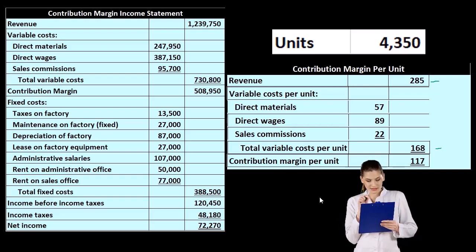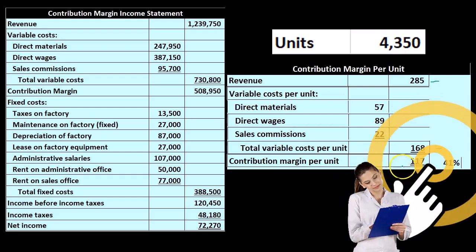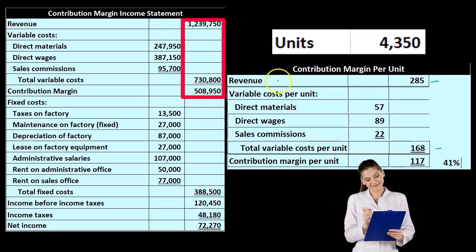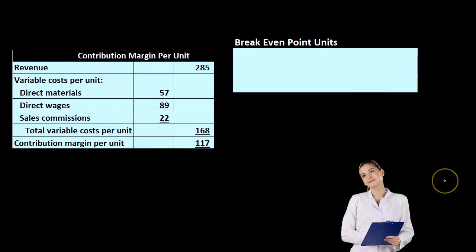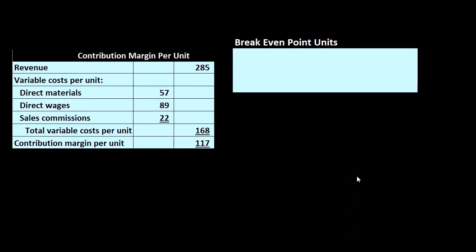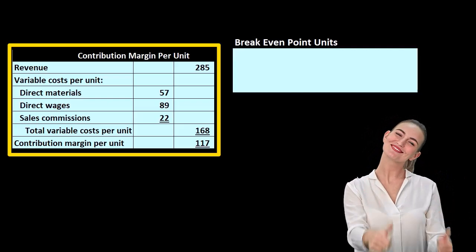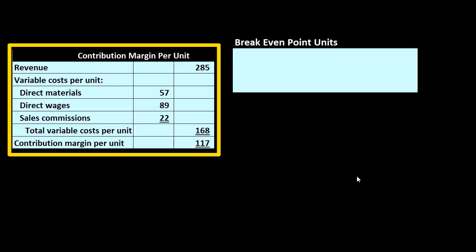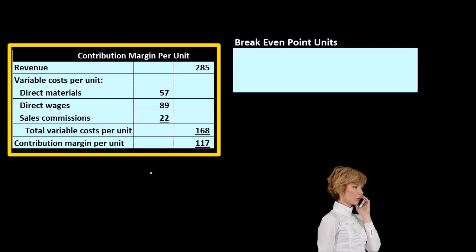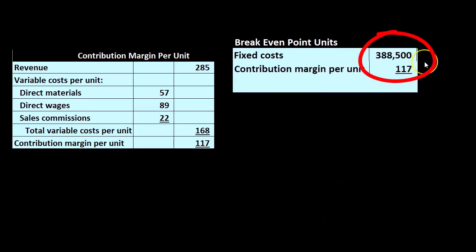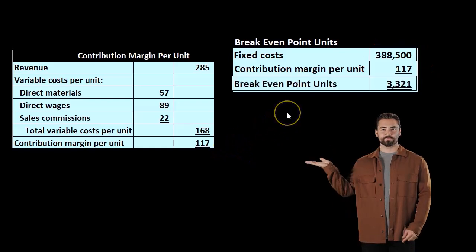We can also calculate the contribution margin percent as the contribution margin per unit divided by the revenue per unit, representing the contribution margin as a percentage. Once we have that, we can calculate the break-even point — one of the fundamental questions in business: how many units do we have to sell to basically break even and cover our costs? With costs broken out between variable and fixed, we start with fixed costs of 388,500. Dividing by the contribution margin of 117 gives a break-even point of 3,321 units.